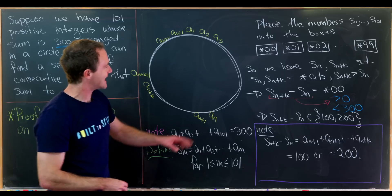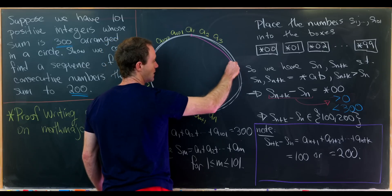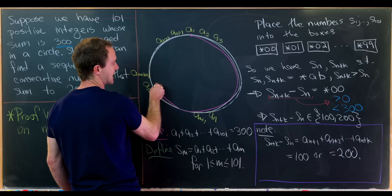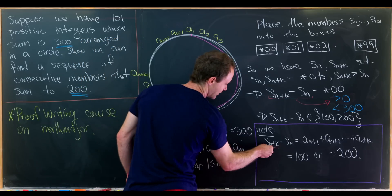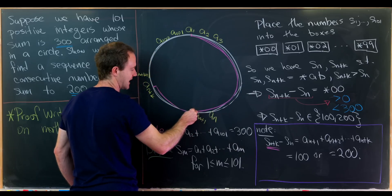Great. So now let's notice that sn plus k is the sum from a1 all the way up to an plus k. So maybe I'll underline this in the magenta. That's the arc that we're getting out of sn plus k.